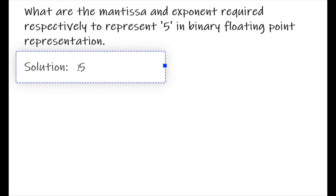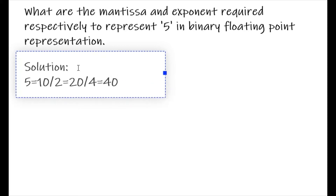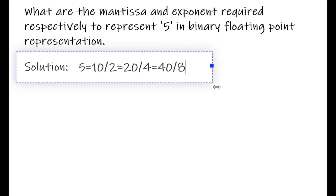So 5 can be written as 10 by 2, or 20 by 4, or 40 by 8, but these are not the binary floating point representation. In binary point representation, the number should be in point form.